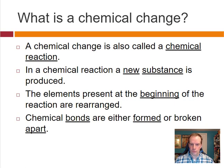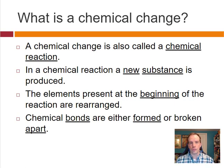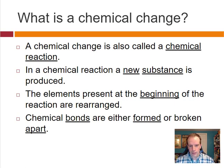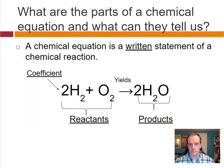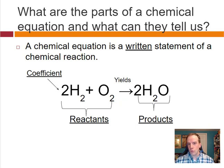A chemical reaction occurs whenever a new substance is produced. Scientists think about this in terms of chemicals being rearranged — the bonds holding some atoms together change and hold different atoms together. So chemical bonds are either formed or broken.